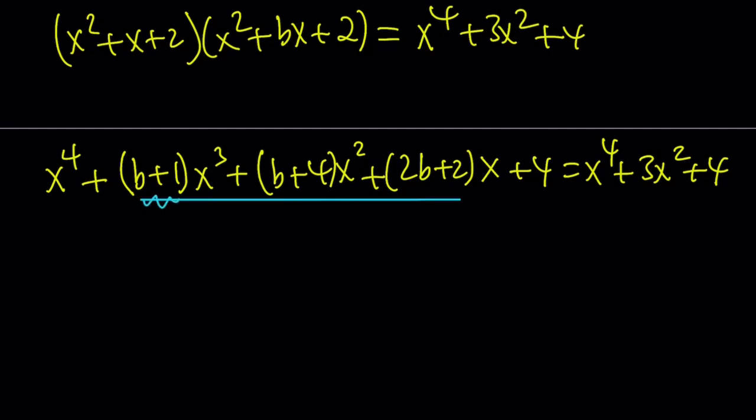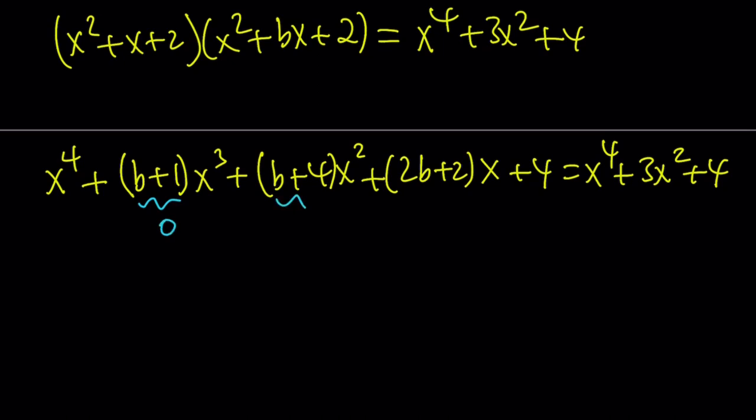So here, oh, that doesn't look good. The coefficient of x cubed on the right-hand side is, there's no x cubed, so it's 0. So this is supposed to be 0. The coefficient of x squared on the right-hand side is a 3. The coefficient of x is 0. There's no x. And the constants are the same. So even though we have a single variable, we have three equations, but they all mean the same thing. So let's just solve one of them.